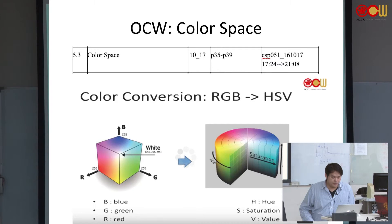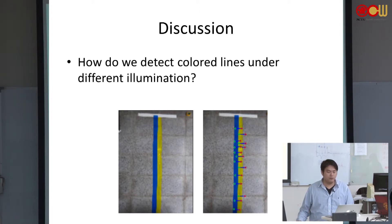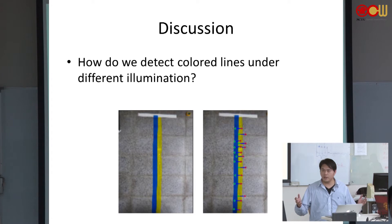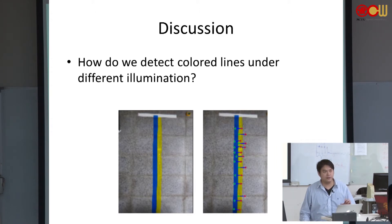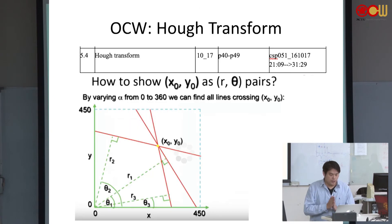We also use color space in the assignment. Think about this: if we want to detect color lines under different illuminations — for example, under sunshine or in the dark — the color may look different in your camera. What can you do about that? That is something you want to think about.